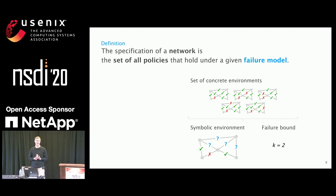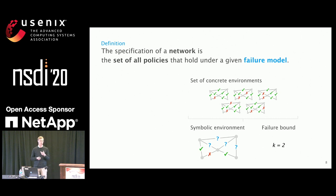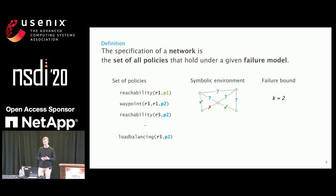For a network operator, it could be quite cumbersome to enumerate each and every concrete environment. This is why you can capture this with a symbolic environment, where you assign every link either the state up, down, or symbolic, and you provide an additional failure bound — which says that at the same time, only two links can fail. Together, the set of policies and the failure model gives you the specification.